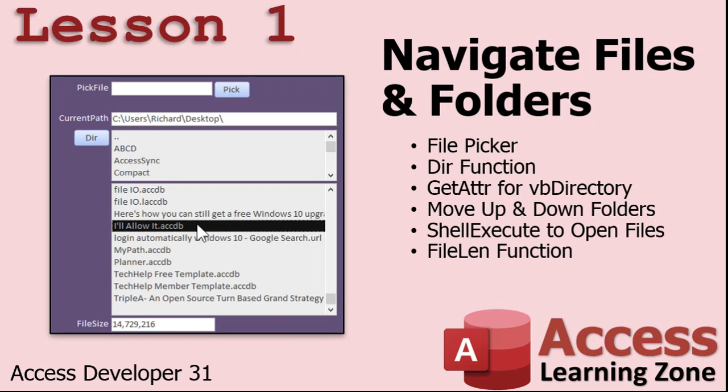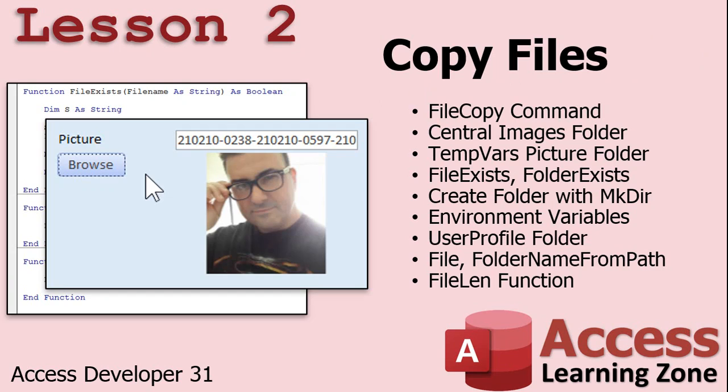In lesson two, we're going to learn how to copy files from one location to another. I've covered bits and pieces from this lesson in other videos, but there's a lot of new stuff here too. We'll learn about the FileCopy command, create a central images folder so you can pick a file and copy it to your server images folder, and learn how to check if a file or folder exists using the file exists and folder exists functions.